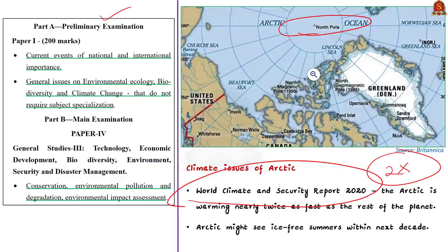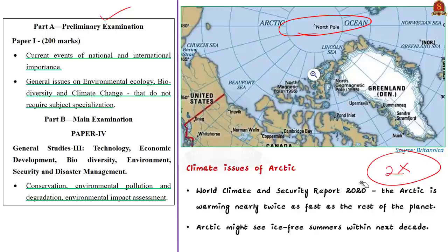In the next few decades, the Arctic will lose most of its ice. This will increase sea levels and affect the entire dynamics of world climate. Many countries are now showing interest in the Arctic, and this interest will lead to exploration, construction activities, and mineral extraction. It will cause significant environmental damage and speed up the melting of Arctic ice. This is the context behind the editorial.